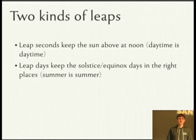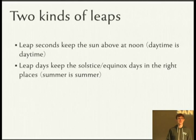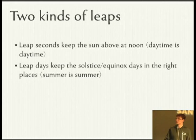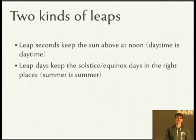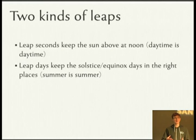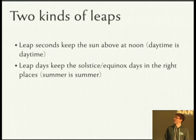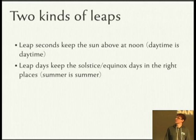So we've talked about two different kinds of leaps: leap seconds and leap days. Leap seconds are the ones that keep the sun overhead at noon, and leap days are the ones that keep the seasons — the equinoxes and the solstices — in the right places. Both of these are for humans, because we live on the Earth, we have circadian rhythms, we like to see the sun during the day. It's just an unstable world, so we have to deal with it in some way.